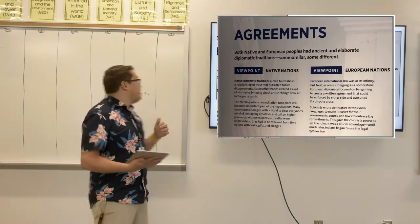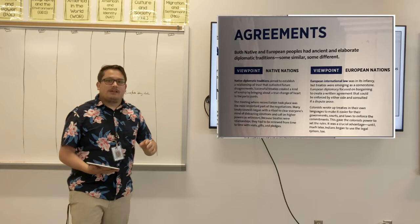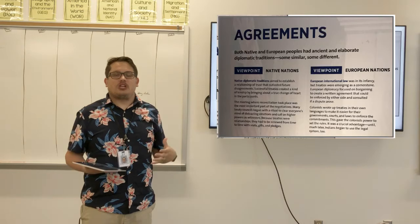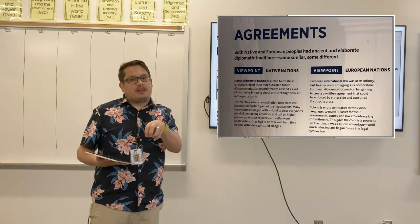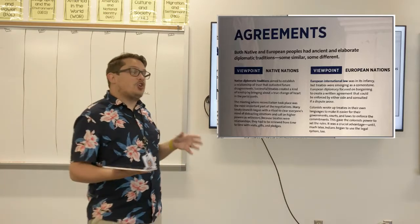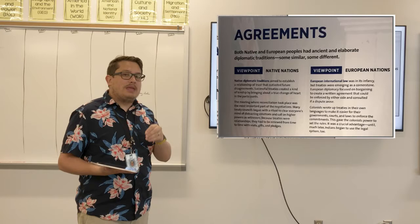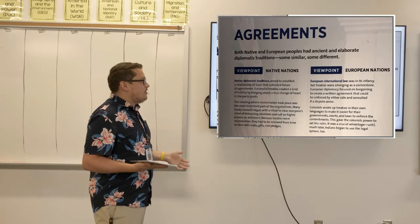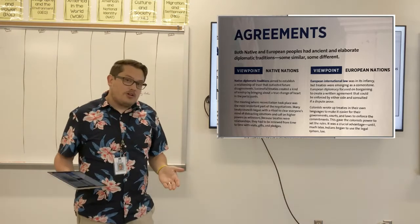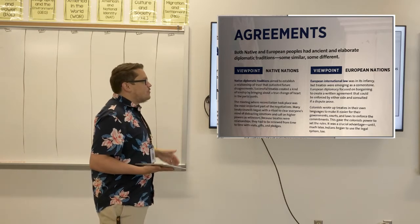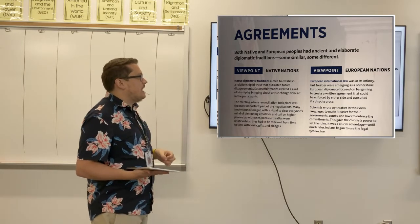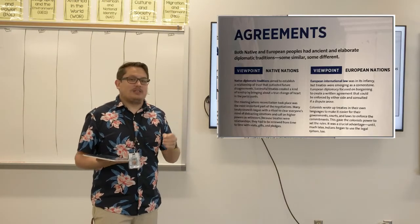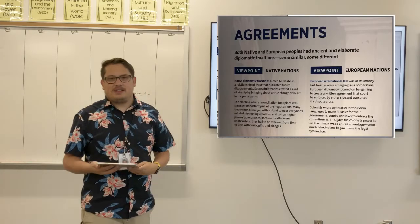We see this even present day — in negotiations between us and China, we can make immediate economic agreements that don't address the full relationship. Colonists wrote up treaties in their own languages to make it easier for their governments, courts, and laws to enforce commitments — a crucial advantage. That gave colonists the power to set the rules. We'll learn how, even when the legal system later becomes something the Natives can use, it doesn't always end up working out for them.